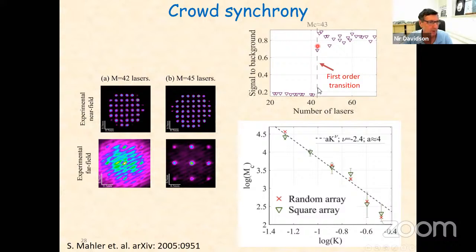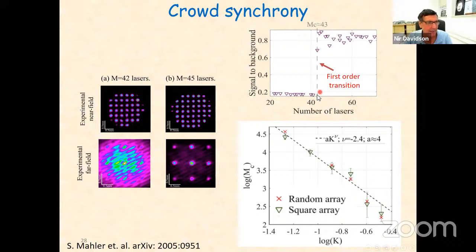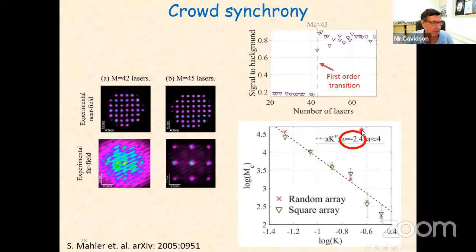The position of this jump depends on the strength of coupling. Stronger coupling means fewer lasers are needed to synchronize via the bridge. We controlled the coupling and found for each value the critical number of lasers crossing synchronization, which fulfills a power law for both a square array and a random array. This power law has an exponent of −2.4, not the standard −1 expected from the Kuramoto model, and this agrees quite well with the numerical prediction by Roy and Ott.